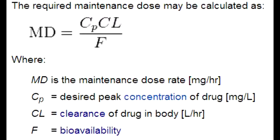Describe the changes that would occur in maintenance dose and loading dose if there is renal or liver disease. If there is renal or liver disease in a patient, the maintenance dose will decrease, but the loading dose is unchanged.